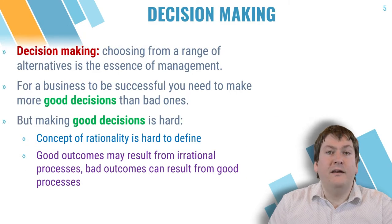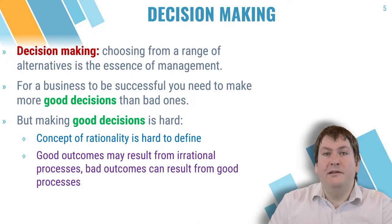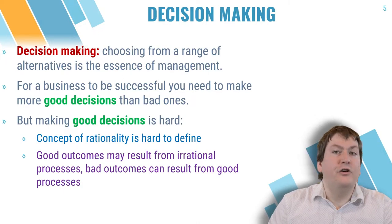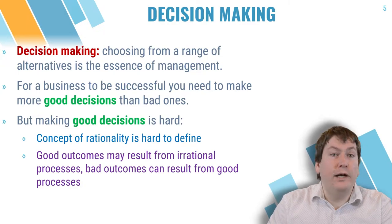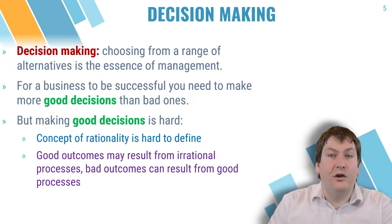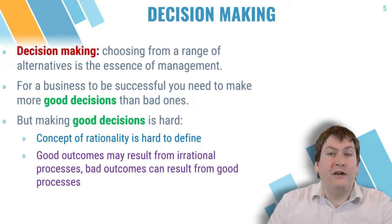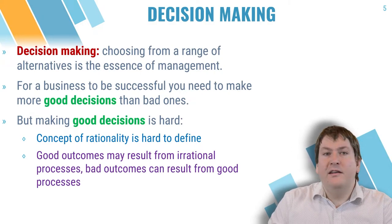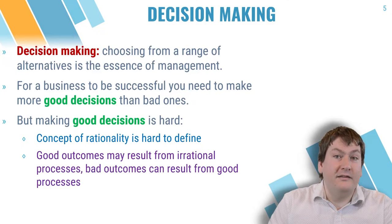The opposite can also be true. You can make perfect decisions with complete information at the time, but still have a bad outcome. For example, you could have started a new movie theater chain at the end of 2019 and done all your due diligence and made the best decisions possible, but it wouldn't have helped you once the COVID-19 pandemic hit. This does not mean that decision was irrational or poor at the time. It's possible to commit no mistakes at all and still lose — that's just life.